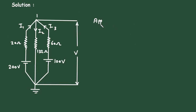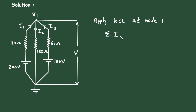Apply KCL — that is Kirchhoff's Current Law — at node 1. Let's say this node voltage is V1. According to KCL, the summation of all the currents entering a node is equal to the summation of all the currents leaving the node.